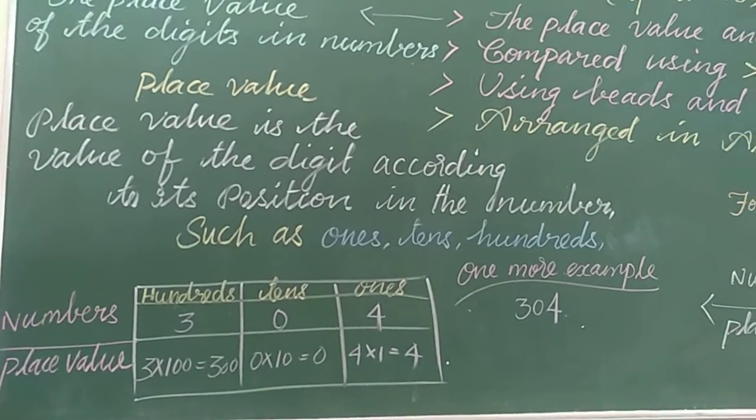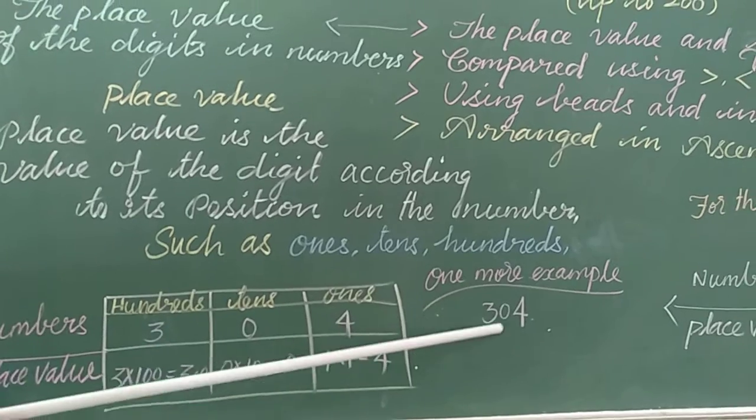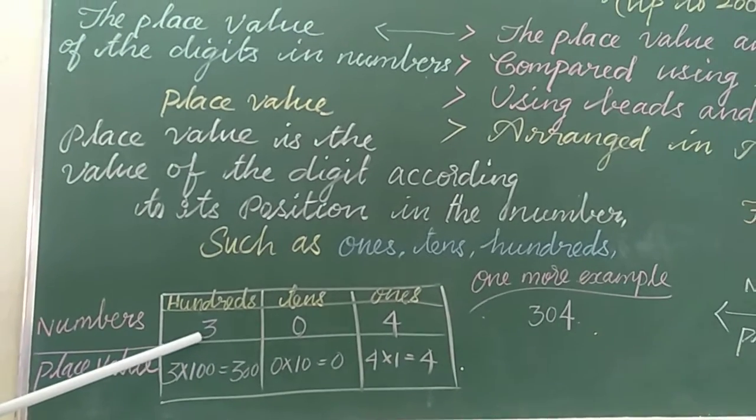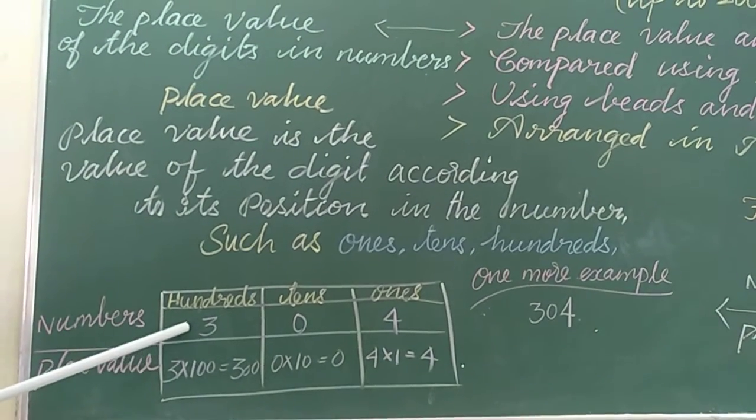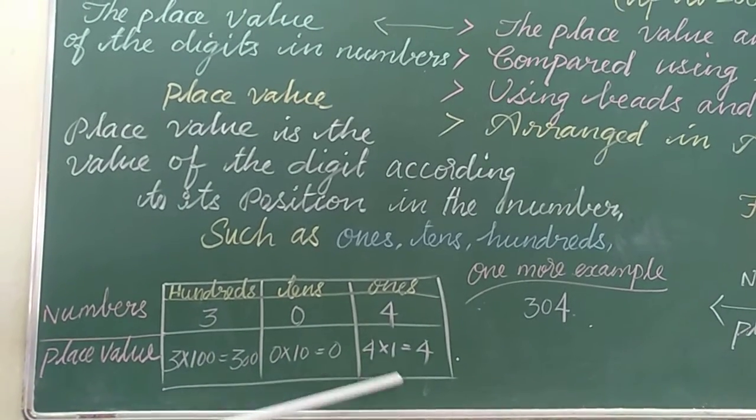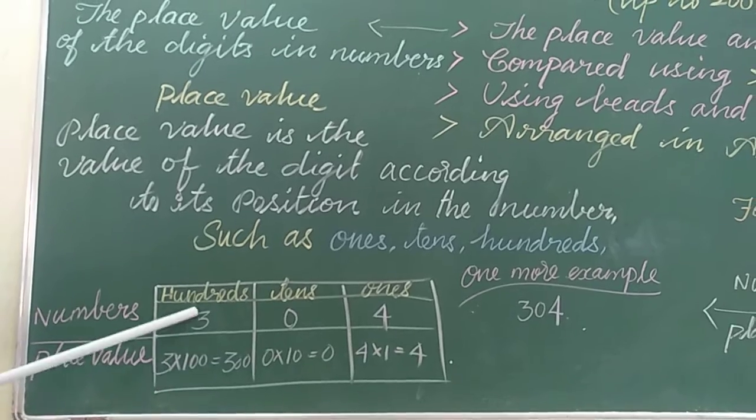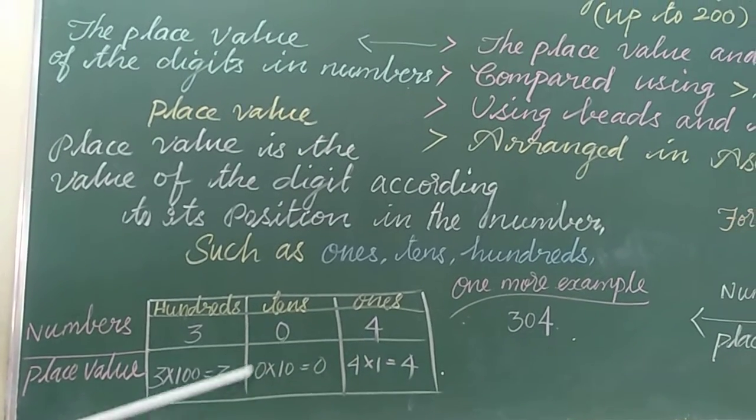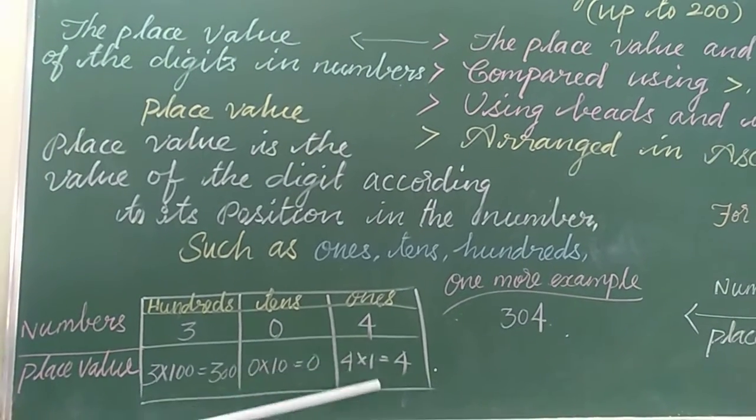Now, let's try to solve one more example, 304. Then, same as you just create a box to write 100, 10, 1s. Then, to make numbers and place value. Here, 3 in 100 column, 0 in 10s column, 4 in 1s column.